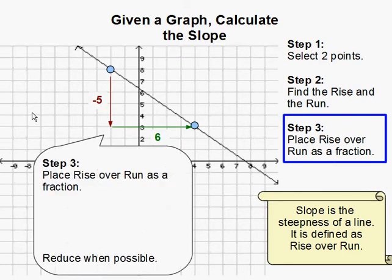Now, the slope is the steepness of the line and it is defined as rise over run.